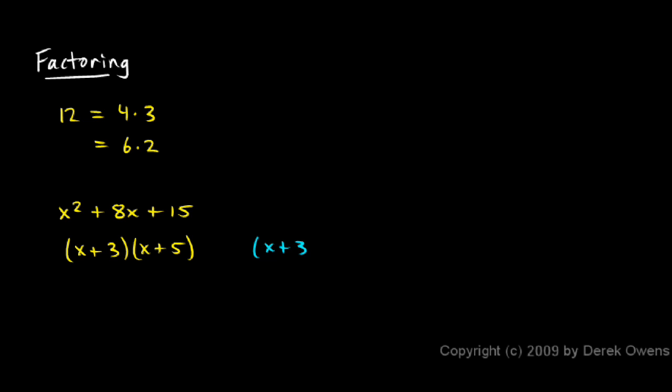If I multiply these together, x plus 3 times x plus 5, I'll do the FOIL here and you'll see that it does result in that expression. I do the first, that's x times x. And then the outer, that gives me 5x.